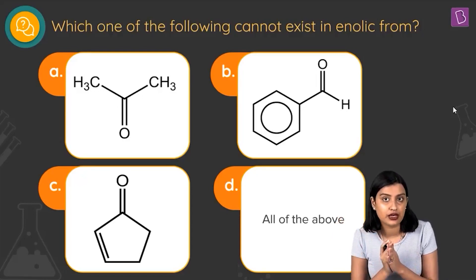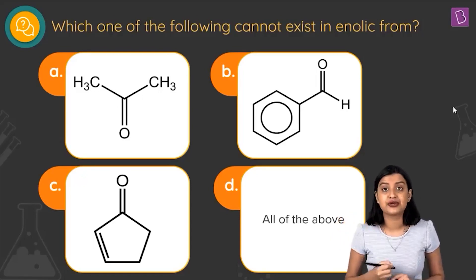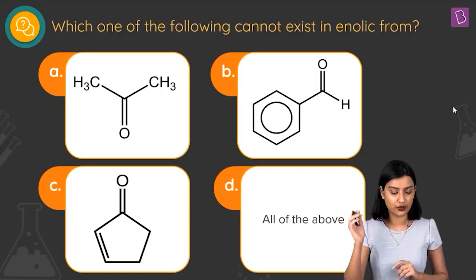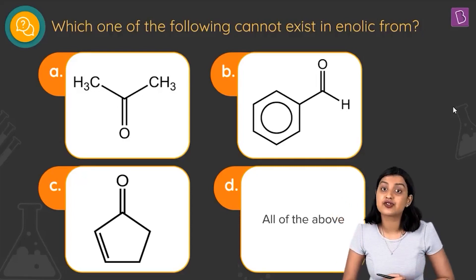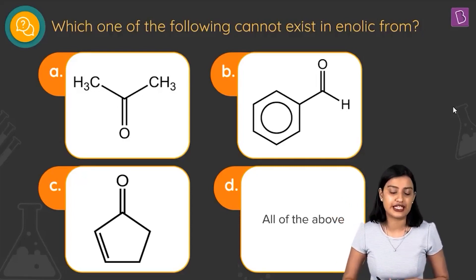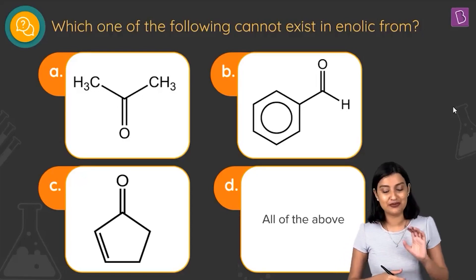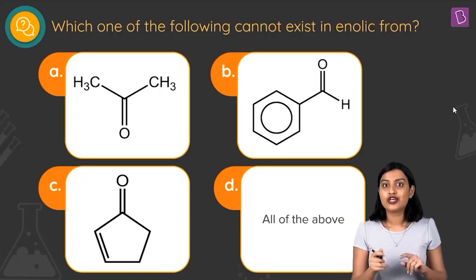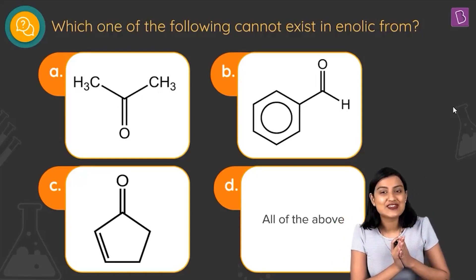Option C similarly has a carbonyl carbon with an adjacent sp3 hybridized carbon bearing an alpha hydrogen, so it can also show an enol form. Option B is benzaldehyde (PhCHO). Its alpha carbon is not sp3 hybridized, so there is no scope for enol form in benzaldehyde.